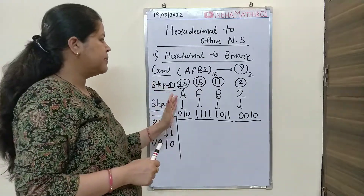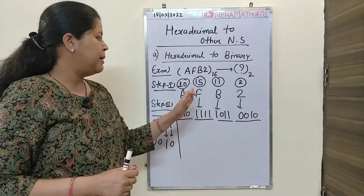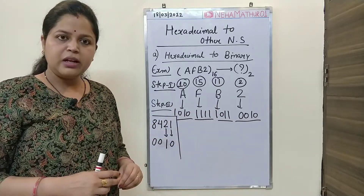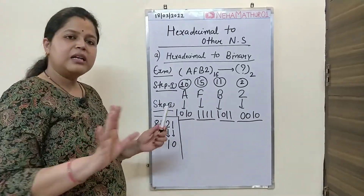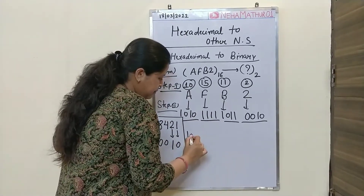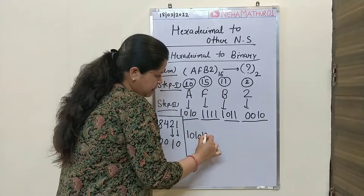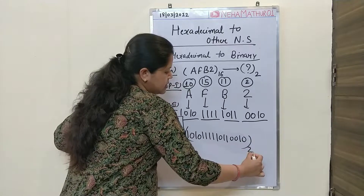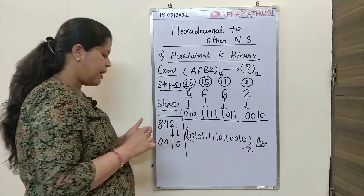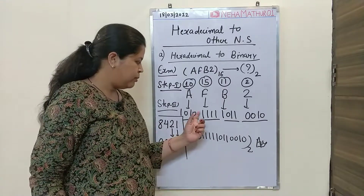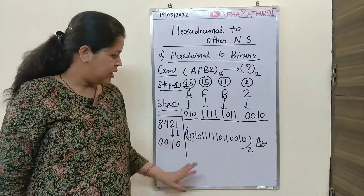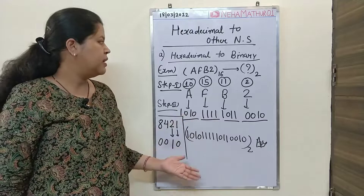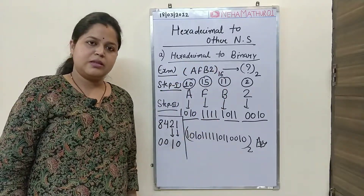So, the first step is to write the hexadecimal number with proper spacing. After that, convert each individual digit into its 4-bit binary equivalent. The last step is to write the complete number by removing all the spaces between them. After applying the second step, you directly get the answer by removing all the individual spaces. This is your final answer — the simple process by which you can convert hexadecimal number system into binary.